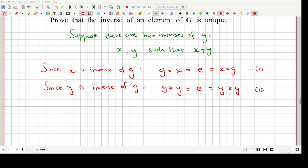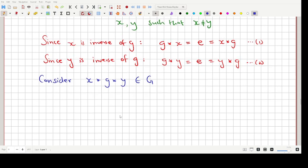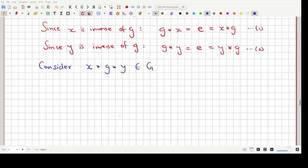Okay, now we'll do something which is pretty magical. So let us consider the element X star G star Y. Now this element belongs to the element G because X, Y and G, all of them belong to the group G essentially. So by the closure property, this element belongs to G. Okay, now let us consider doing this particular problem or finding out the value of X star G star Y in two different ways.